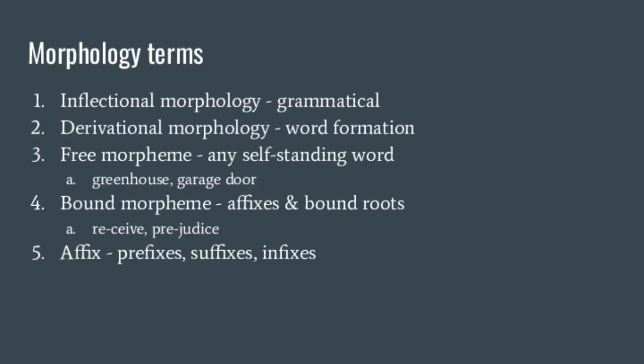A free morpheme is one that can exist by itself — any independent word like 'and,' 'go,' 'Romans,' or 'computer.' A bound morpheme can't stand alone. We can also make compounds in English — like 'greenhouse' — and some compounds are written together while others are written as separate words. There's no regular rule; it depends on frequency and convention. We also have bound morphemes like the elements in 'deceive,' 'receive,' 'prejudice,' and Latin words that can exist by themselves, including affixes — prefixes, suffixes, and infixes.